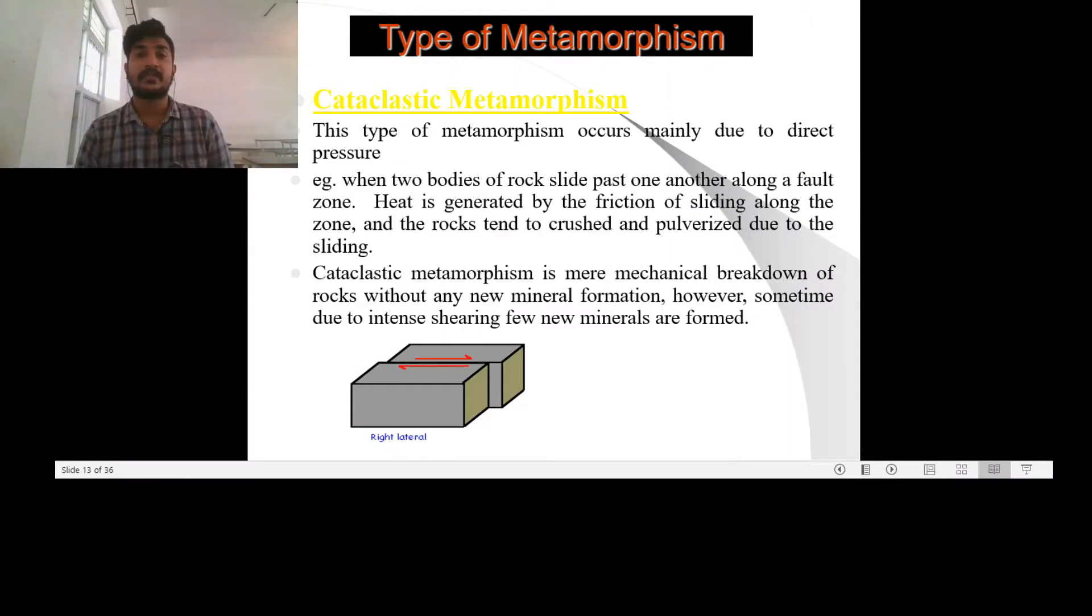Faulting is nothing but the relative movement of two rock bodies slide past each other. And due to this sliding, the rock which has been between these two rock bodies will get pulverized, sheared and will be formed and they form a new rock due to the high shear strength.